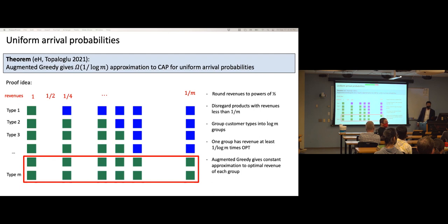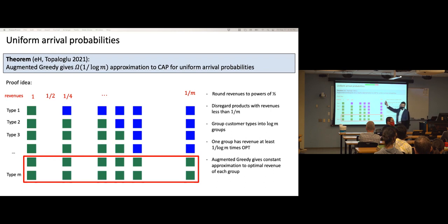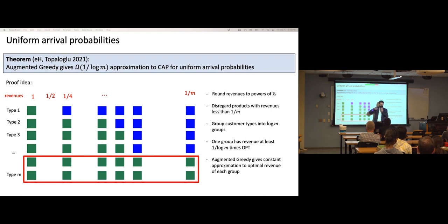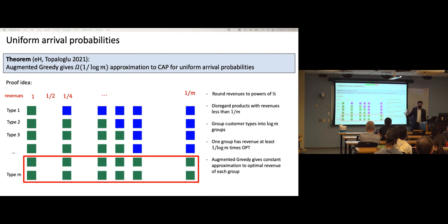This gives a 1/log(m) approximation in the case of uniform theta_j's, and the general case with arbitrary theta_j's is handled similarly in the paper.